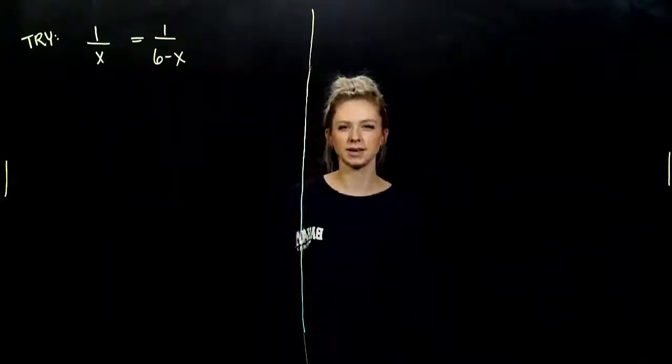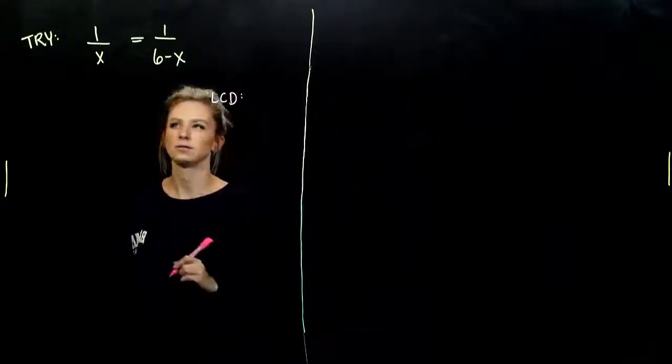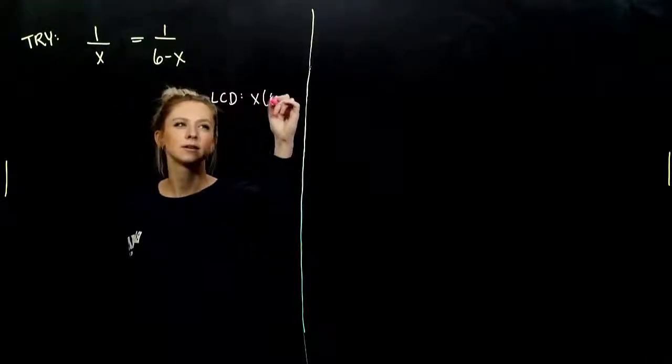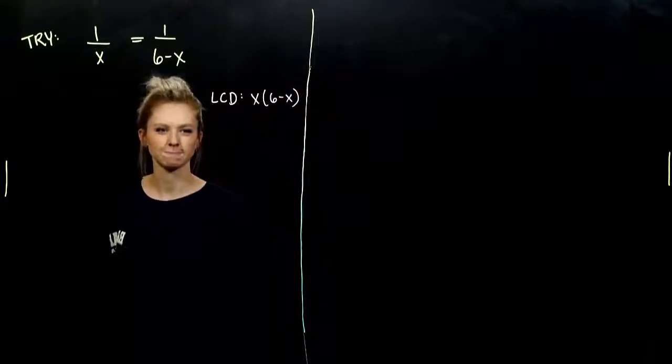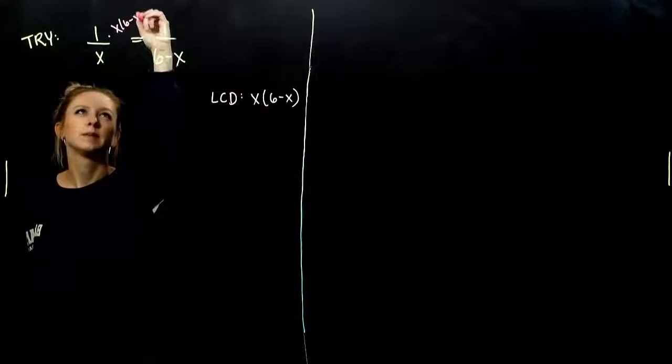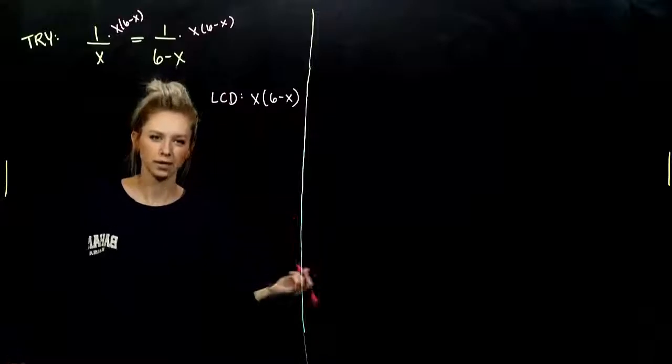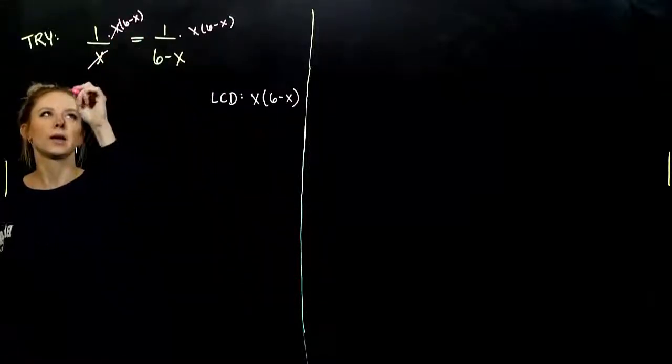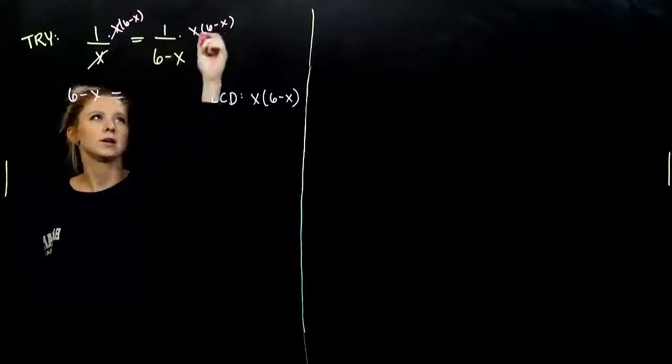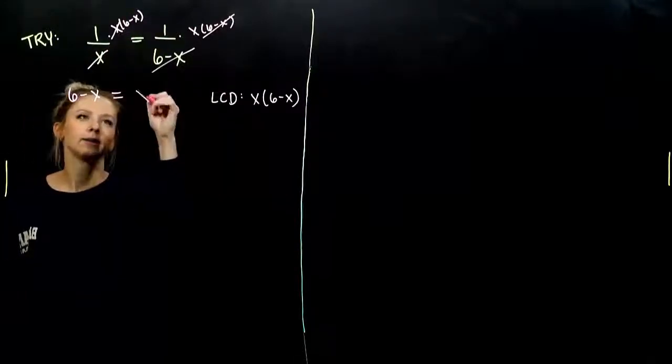So a similar story happened in this case. What was our LCD between these two fractions? If I take x from the first one, what is it missing that the other one has? Entire factor 6 minus x. So when we multiply by the LCD on both sides to every single term, what's happening? It's like we're cross-multiplying. X's go away and we're left with 6 minus x. And over here, 6 minus x goes away and we're left with, as if we multiply that way, x.